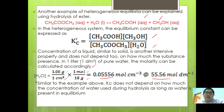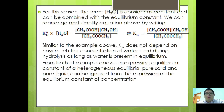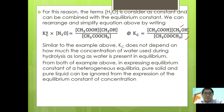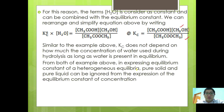Therefore, water is not considered inside the equilibrium expression. Rearranging, Kc0 multiplied by [H2O] — which is a constant — gives a new Kc equal to [CH3COOH] times [CH3OH] over [CH3COOCH3]. From both examples, we can conclude that in expressing the equilibrium constant for a heterogeneous equilibrium, pure solids and pure liquids can be omitted from the expression.